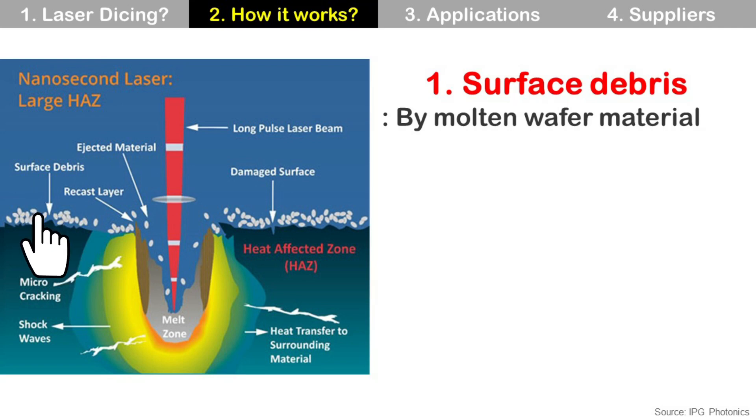The first one is debris. Debris is generated by molten wafer material, then deposited on wafer surface, and it is considered as contamination.